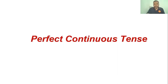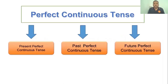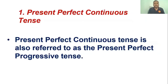Perfect continuous tense — what is this and what do we have to learn on this topic? As usual, there are three timelines we have to talk about: present, past, and future. In the perfect continuous tense also, I have categorized the lesson into three: present perfect continuous tense, past perfect continuous tense, and future perfect continuous tense. Let's move to the present perfect continuous tense.